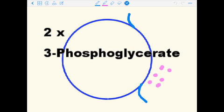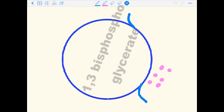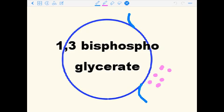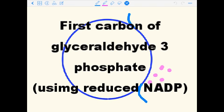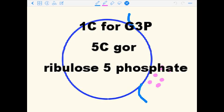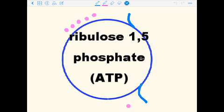Each of these has 3 carbons. 1,3-bisphosphoglycerate is produced, and then glyceraldehyde 3-phosphate is next produced from reduced NADP. From this, ribulose 5-phosphate is produced. Finally, ATP is needed to produce ribulose 1,5-bisphosphate.